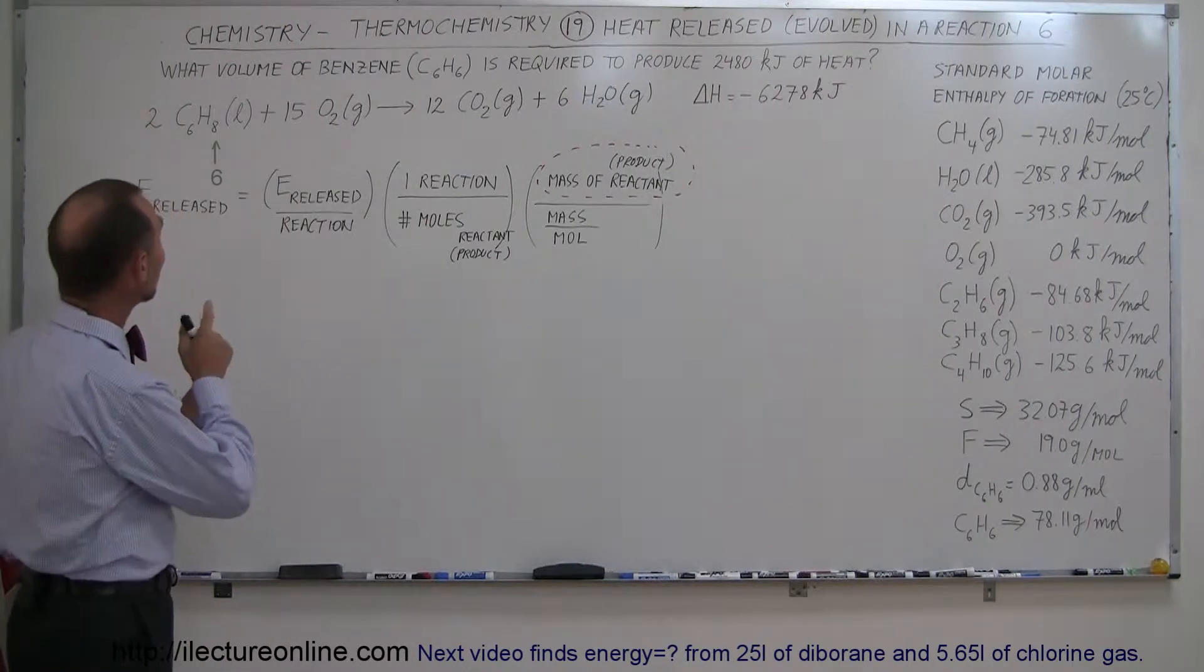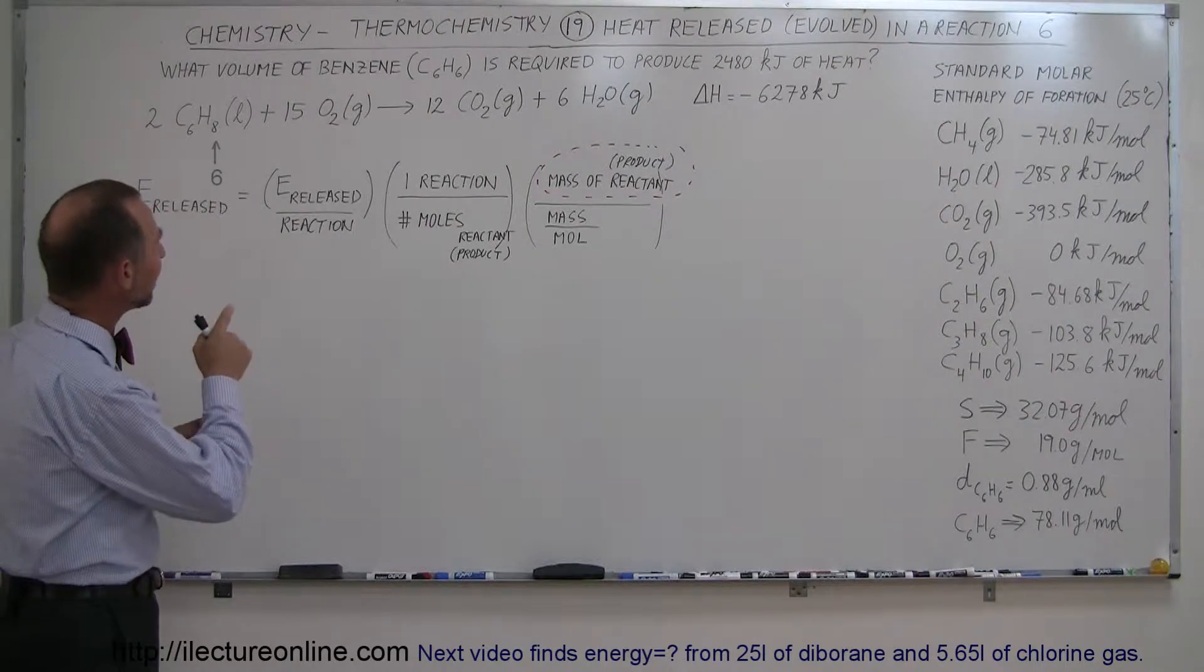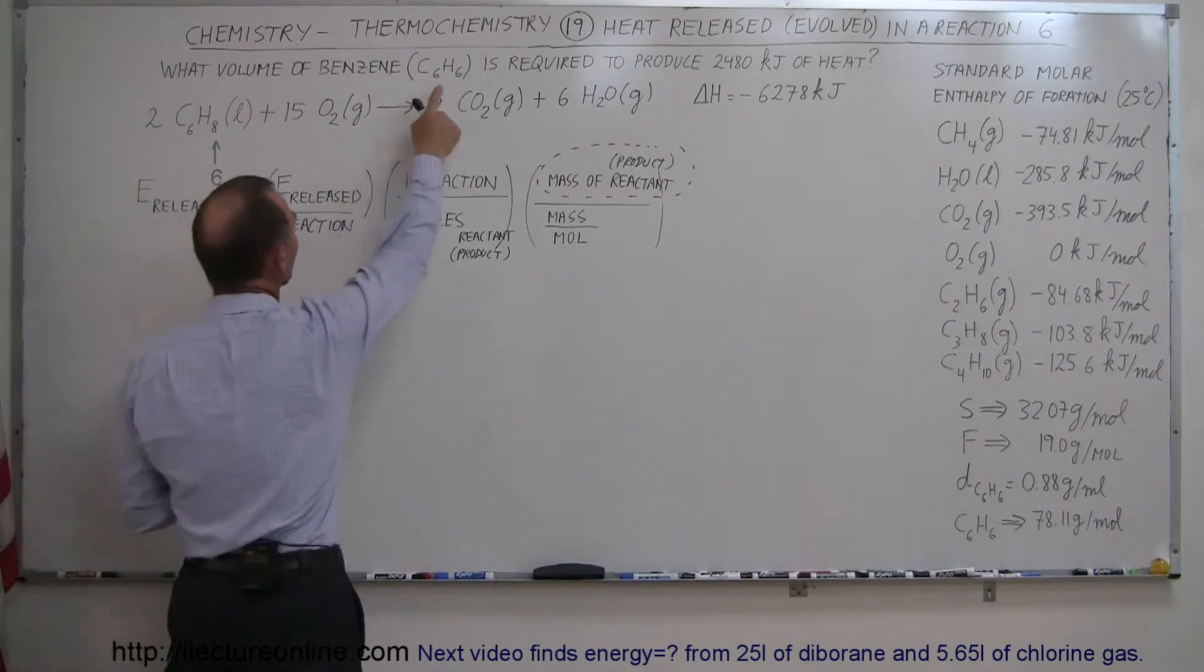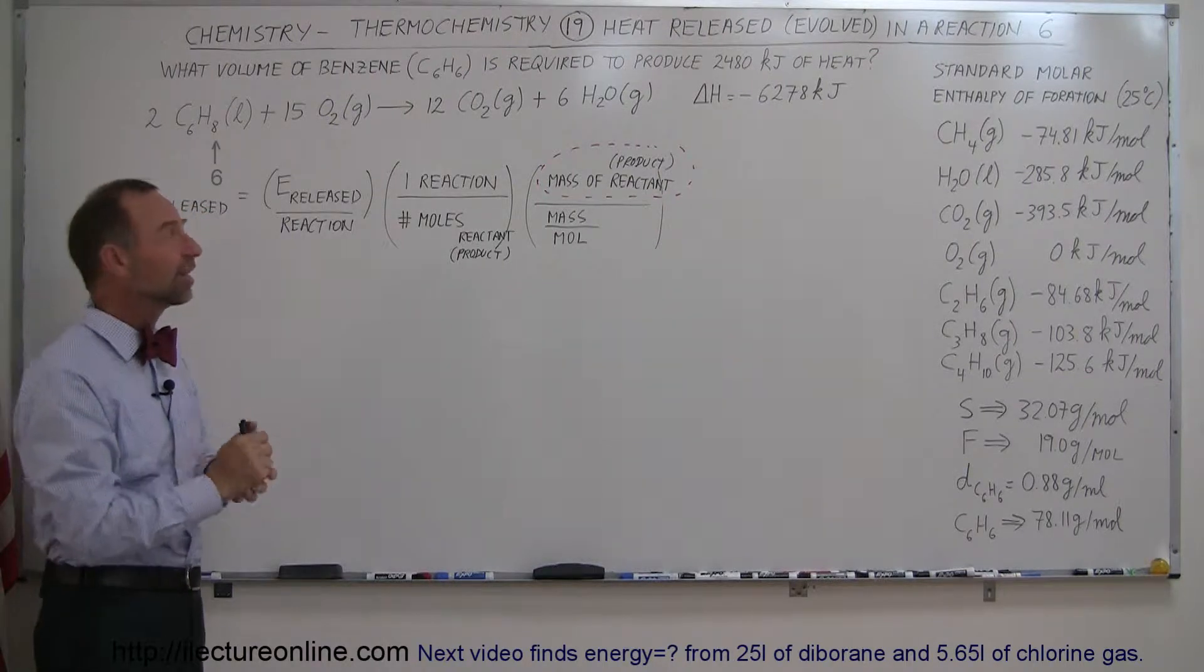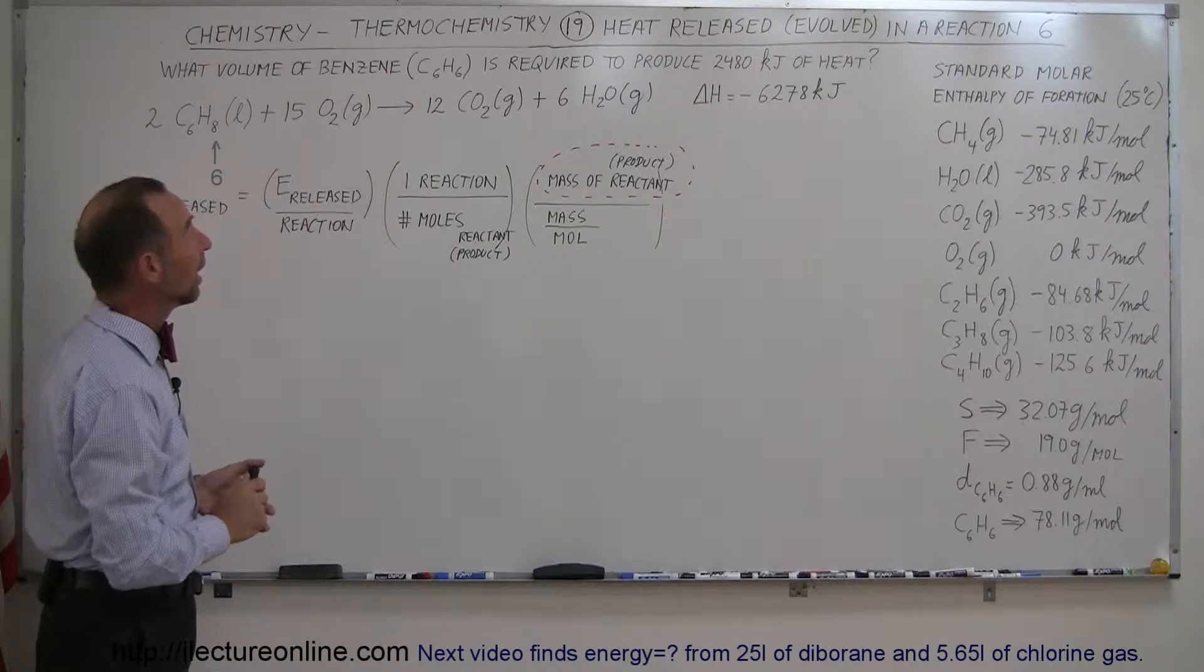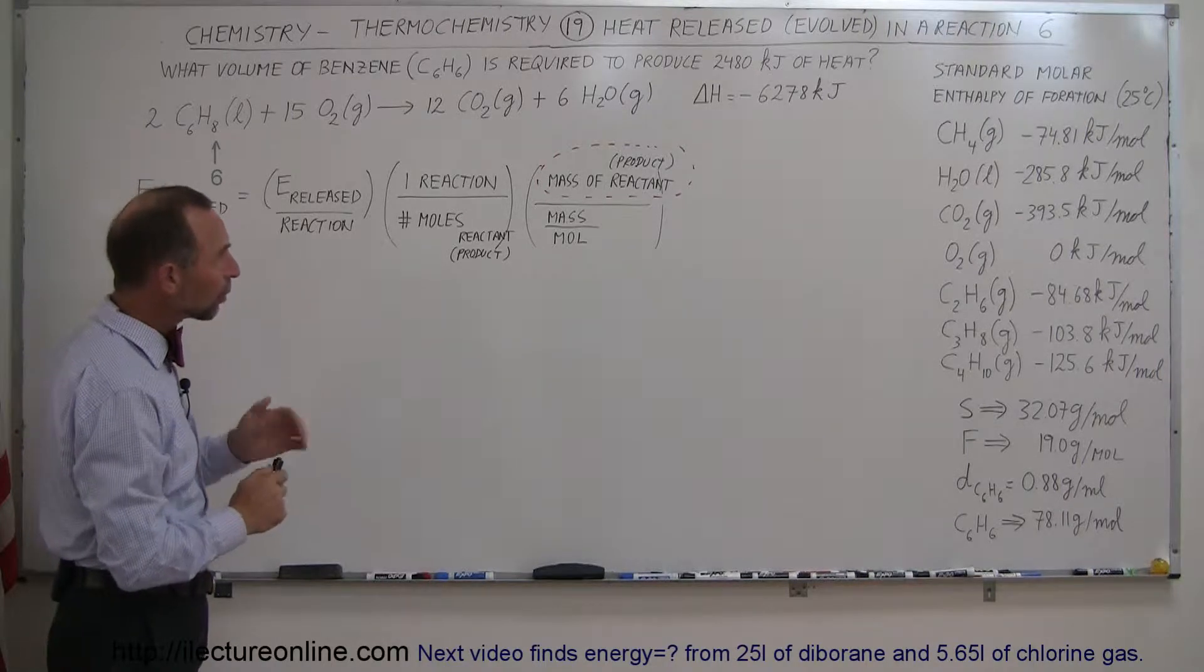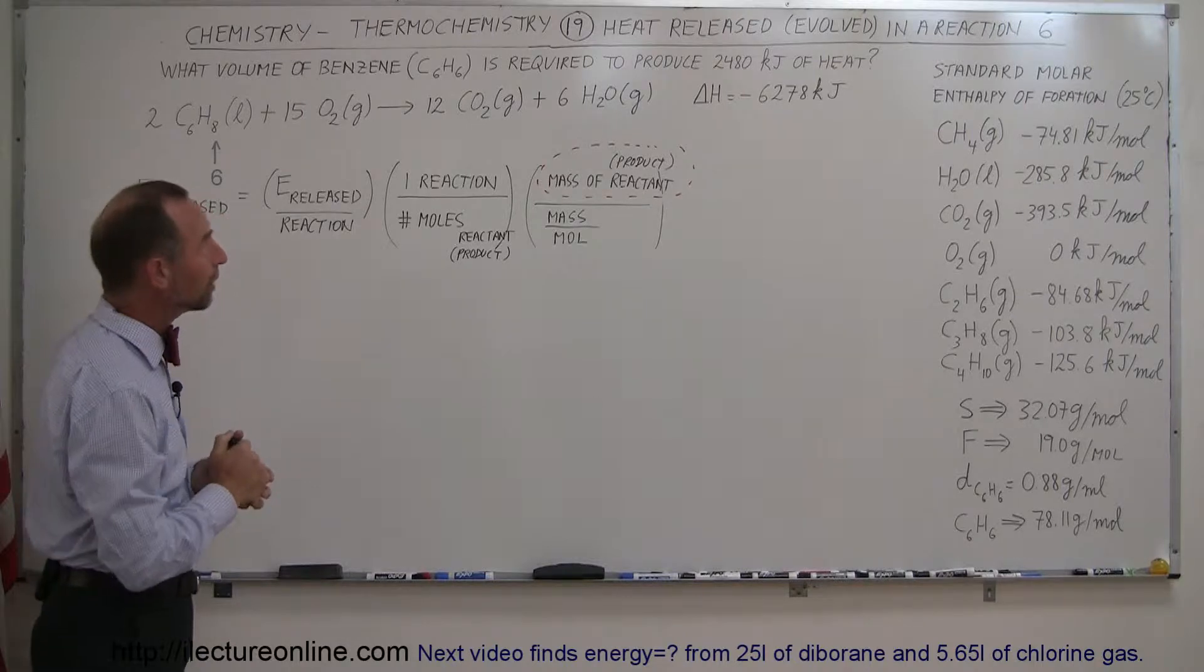So in this particular case we have the question that says what volume of benzene, benzene is C6H6, which is by the way a liquid, it's a component of gasoline, that's sometimes why some places they call gasoline benzene, is required to produce 2480 kilojoules of heat.